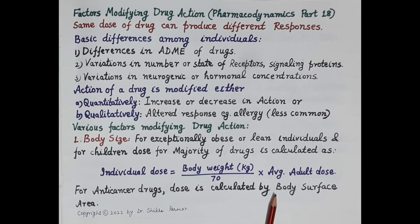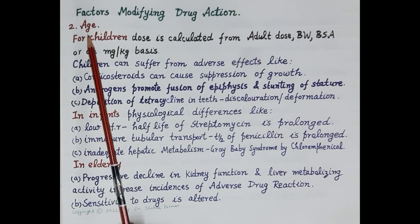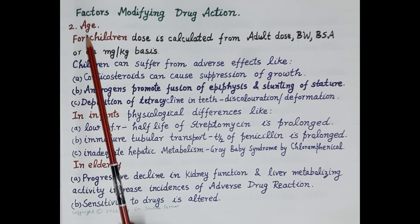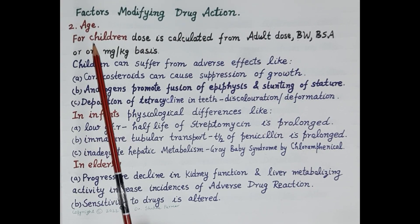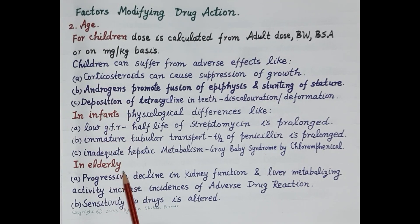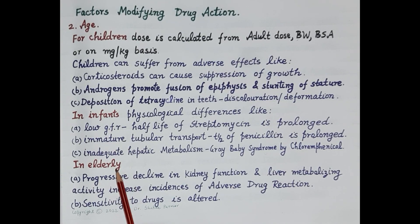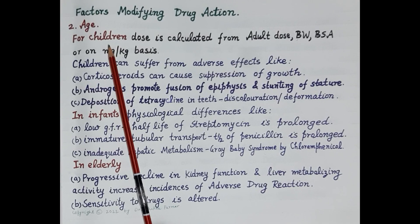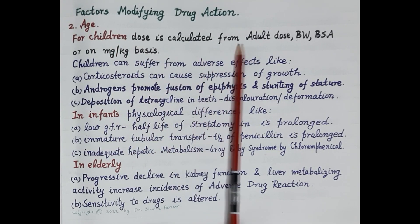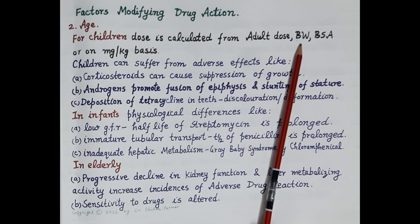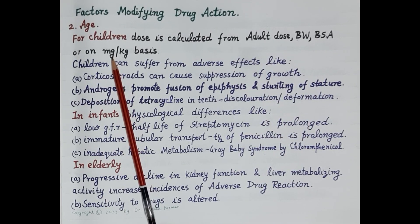The next important factor is age. There are important physiological differences between children, elderly, and adults. In children, body functions are in a developing stage, while in elderly, functions are in a declining stage — for example, reduced kidney and liver function. Dose for children and elderly differs from adults. For children, dose is calculated from the adult dose, body weight, body surface area, or on a mg/kg basis.